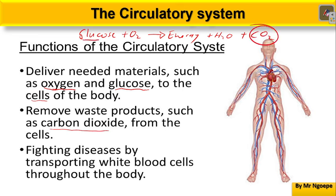Your circulatory system will deliver these two reactants of respiration — so you can produce energy as you are running to your teacher's class before you are late. As a byproduct, it produces carbon dioxide. The function of your circulatory system is to get this carbon dioxide to the lungs so that you can exhale it. Your circulatory system also functions in fighting diseases by transporting white blood cells throughout the body.